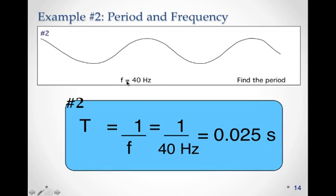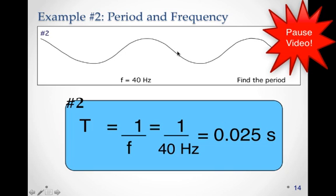And the inverse is if we were given the frequency of 40 Hertz for this particular wave, we could find the period. Period is one over the frequency. One divided by 40 Hertz is 0.025 seconds. So that's how long it would take to repeat the wave.